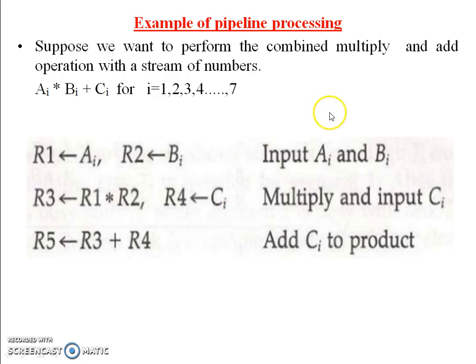I will give one example of Pipeline Processing. Suppose we want to perform the combined multiply and add operation with a stream of numbers: Ai * Bi + Ci for i = 1, 2, 3, 4 up to 7 numbers.